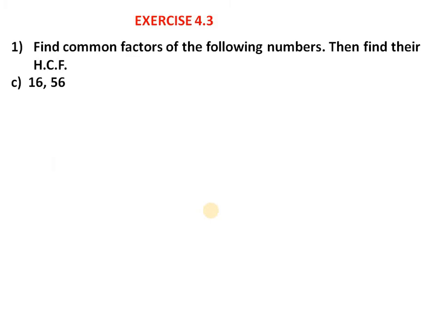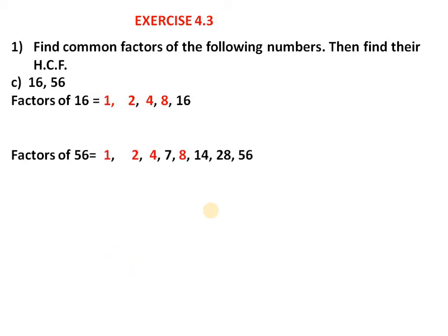Similarly, part C: 16 and 56. Factors of 16: 1 × 16, 2 × 8, 4 × 4 — so factors are 1, 2, 4, 8, 16. Factors of 56: 1 × 56, 2 × 28, 4 × 14, 7 × 8. Now we find the common factors.